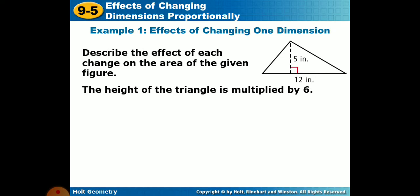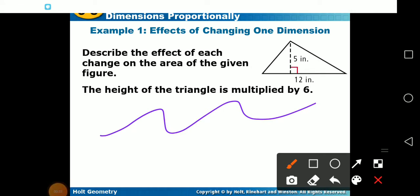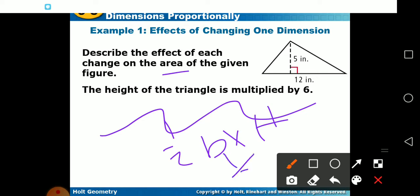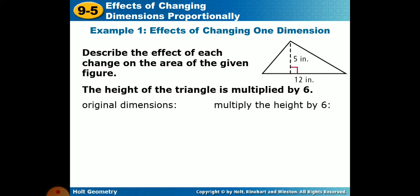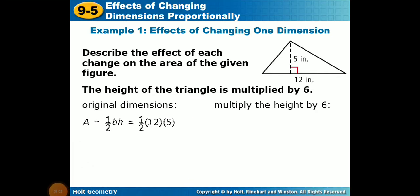Describe the effect of each change on the area of the given figure: the height of the triangle is multiplied by six. The area of a triangle is half base times height — half of 12 times 5. These are the original dimensions, and when we multiply the height by 6...